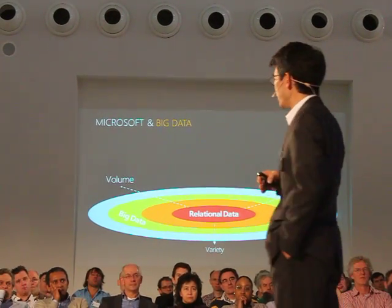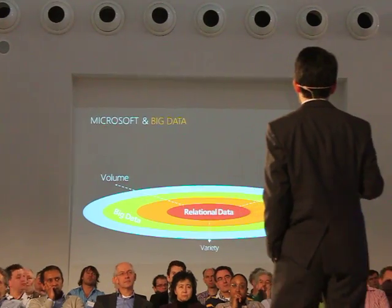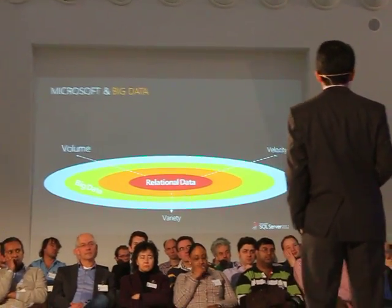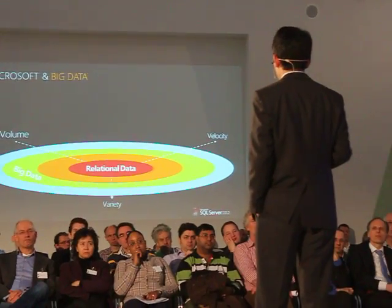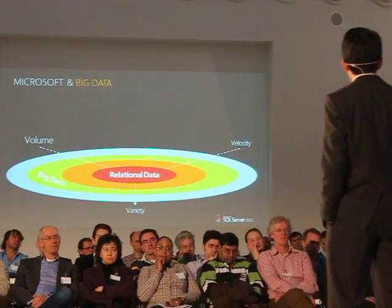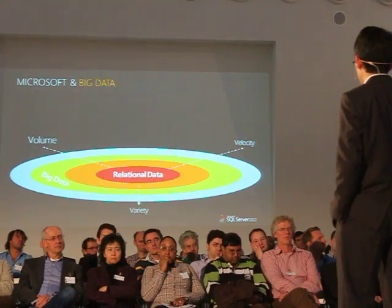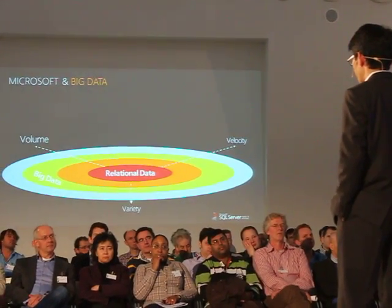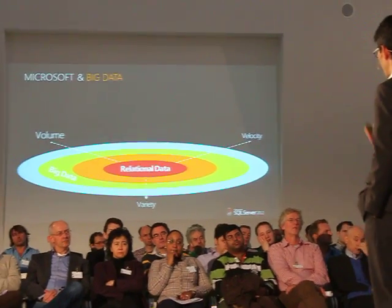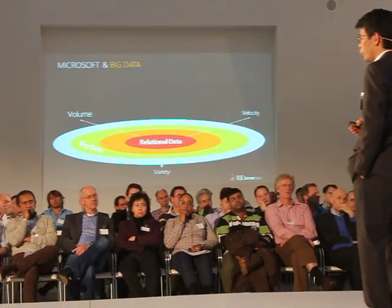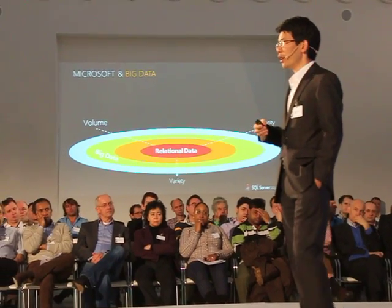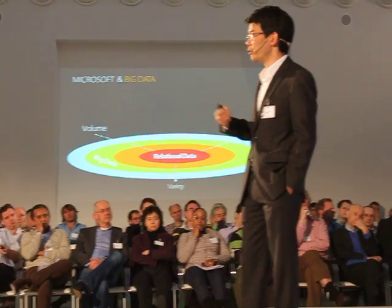Taken individually, each of these dimensions of big data are in fact things that we can deal with in SQL Server today and already deal with in SQL Server today. Our data warehouse can handle over 600 terabytes of data. SQL Server can handle unstructured data as well as structured data, web log data. And we have stream insight already built into SQL Server Enterprise to handle data velocity.